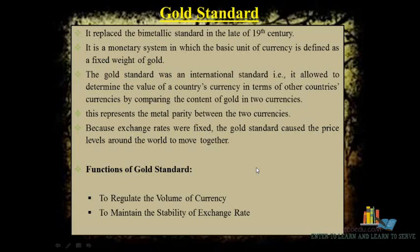Under the gold standard, two important functions exist. First, the volume of currency in the country is regulated — over-issuing does not happen because the gold reserve acts as a hurdle to printing new currency. Money supply is tied to gold reserves, and even credit creation by banks is limited accordingly. Second, the external exchange rate is stabilized, maintaining stability in terms of other currencies like the dollar or euro.